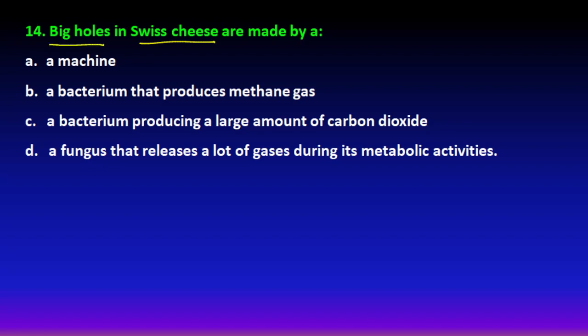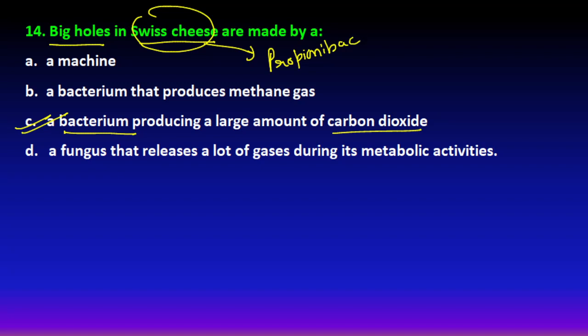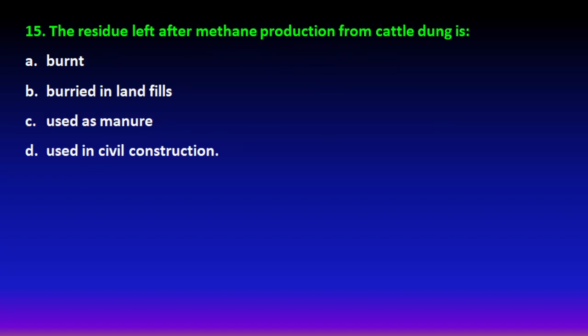Next question: the big holes in Swiss cheese — how are they formed? They are not made by machines. The bacterium responsible is Propionibacterium shermanii, which produces a large amount of CO2, creating those big holes. Remember: 'S' for Shermanii, 'S' for Swiss cheese — that's a good memory trick.